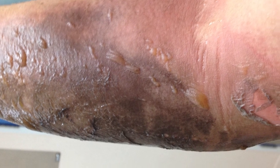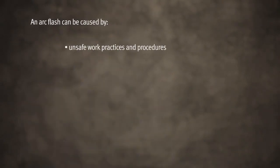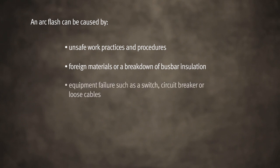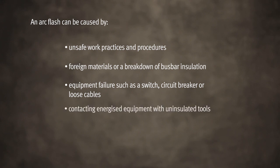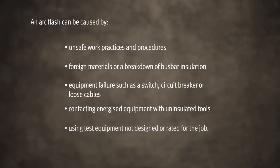This arc can self-sustain long enough to cause an incredible amount of damage to equipment and severe burns to anyone in the vicinity. An arc flash can be caused by unsafe work practices and procedures, foreign materials or a breakdown of bus bar insulation, electrical equipment failure such as a switch, circuit breaker or loose cables, contacting energised equipment when using uninsulated tools, or using test equipment not designed or rated for the job.